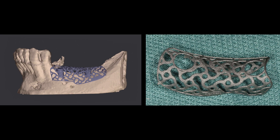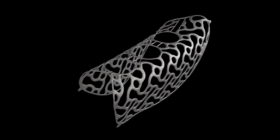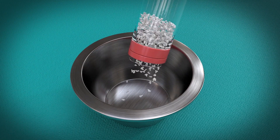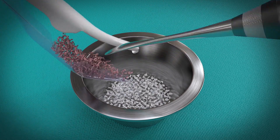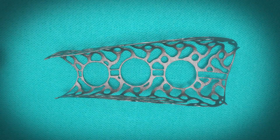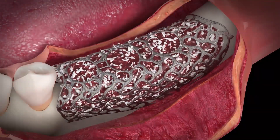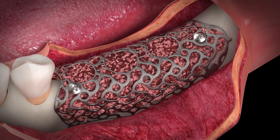Here you can see the design project and then the real product at the end of the production chain. The mesh is already adapted to the defect in a very precise way and can be filled outside of the mouth with a mixture of bone chips and BIOS in a 50/50 percentage. Then the mesh is filled and placed into the mouth and blocked with micro screws in titanium.